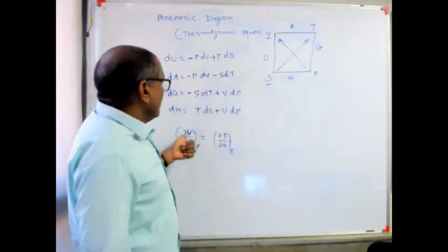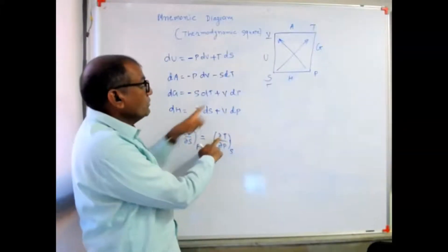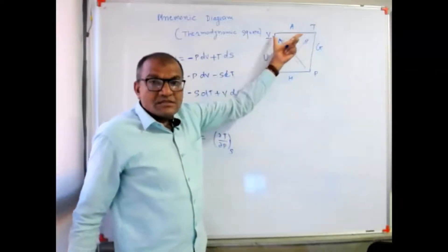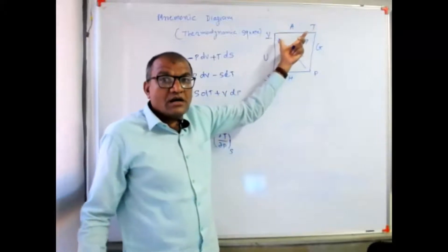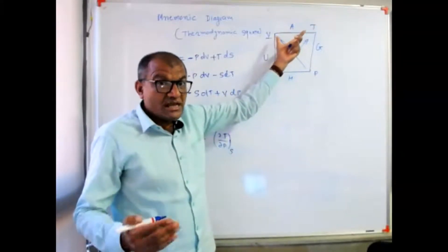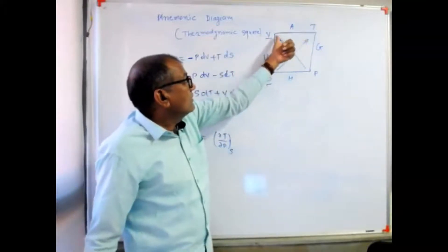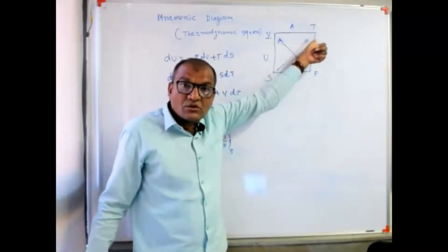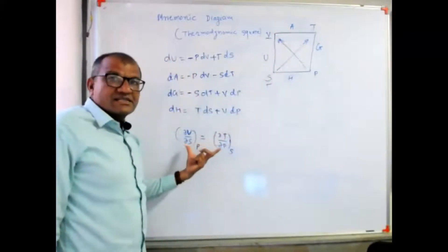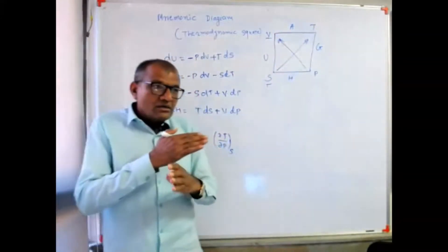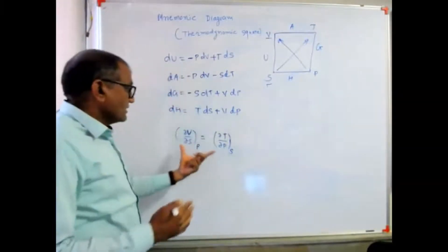For the sign convention, we consider the first variable on each side — here, temperature and volume. If in both cases the arrows point in the same direction, then both sides carry the same sign. If the arrows point in opposite directions, then we must take opposite signs.